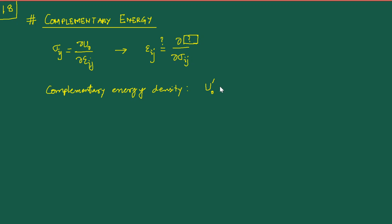We define the complementary energy density u⁰' in this fashion. Just written outright it may seem a little alien, but the idea behind it is something very general mathematically, referred to as the Legendre transformation. It appears not just here but in many areas — for example in thermodynamics — whenever we wish to find counterpart expressions.